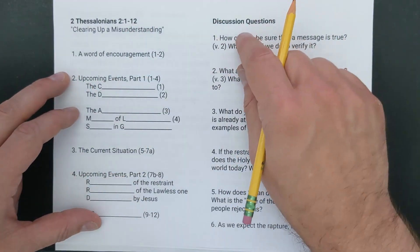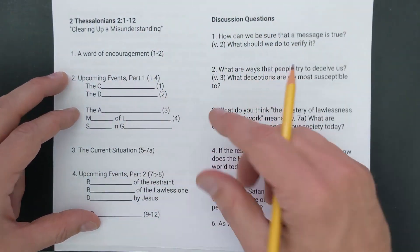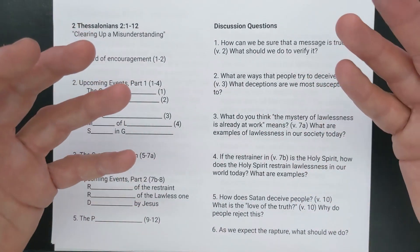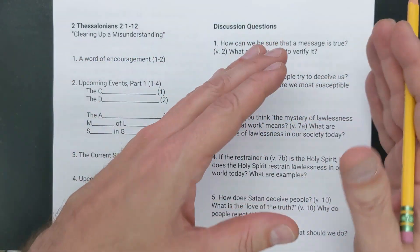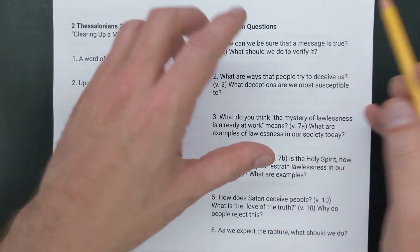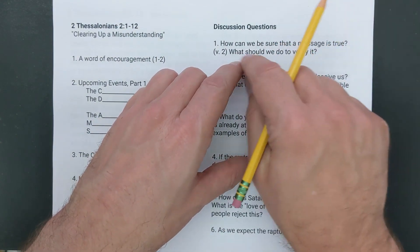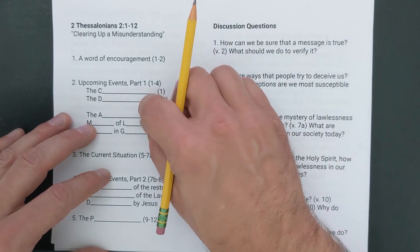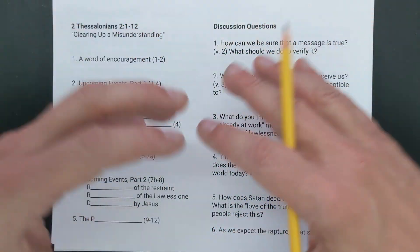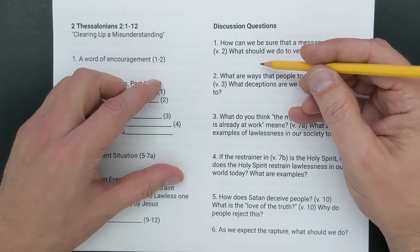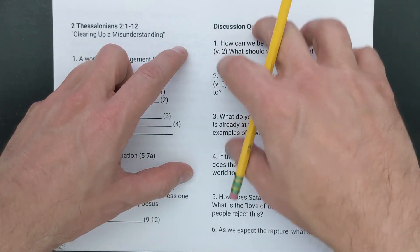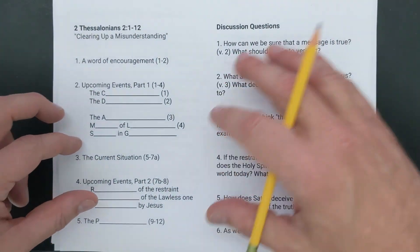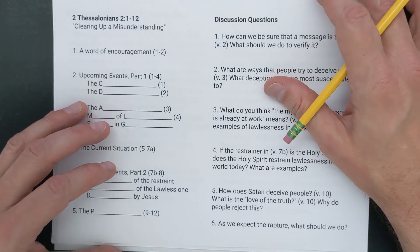The benefit of doing these questions up front is that each small group will have written down a few answers. Then when you go through the outline, instead of waiting awkwardly for someone brave enough to raise their hand, you have a group of people who have already thought about this, jotted some notes, and are ready to bring those thoughts into discussion as you work through the outline. It makes for a richer and more interactive discussion because they've already taken part in thinking about these topics.